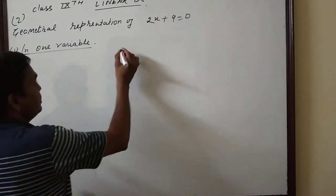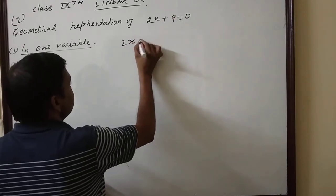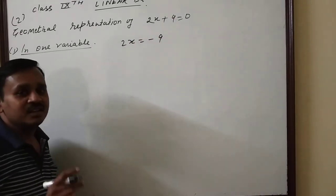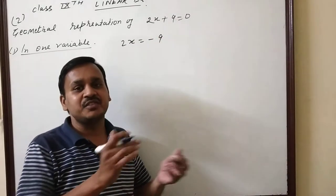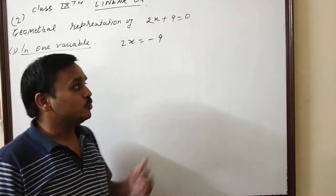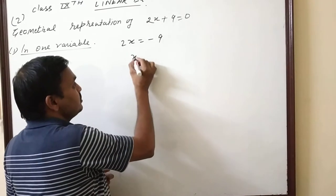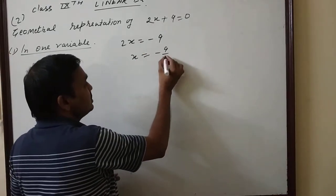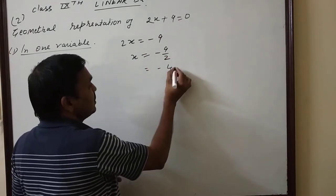To solve the equation: 2x+9=0, then 2x=-9, which means x=-9/2, which equals -4.5.